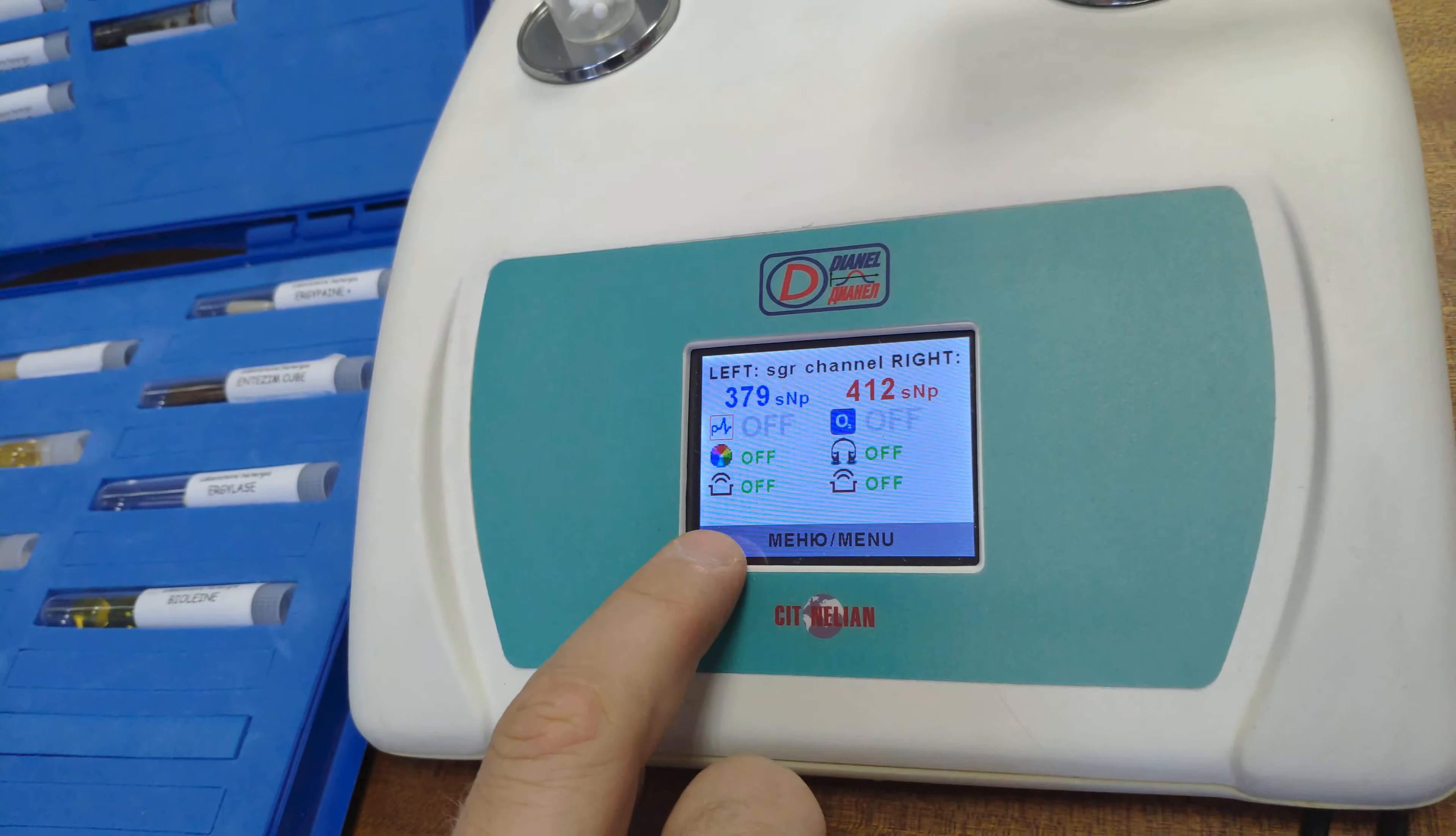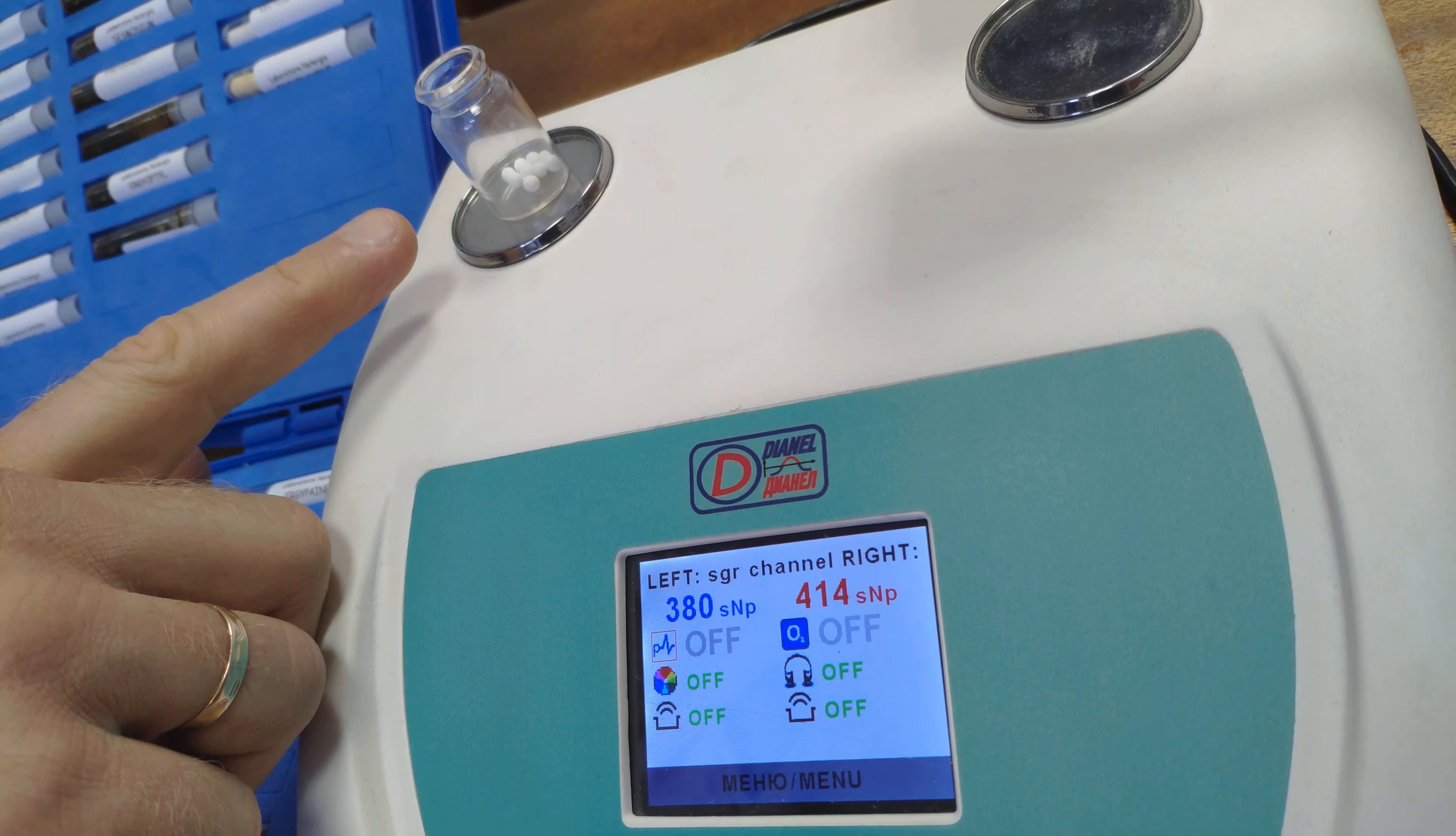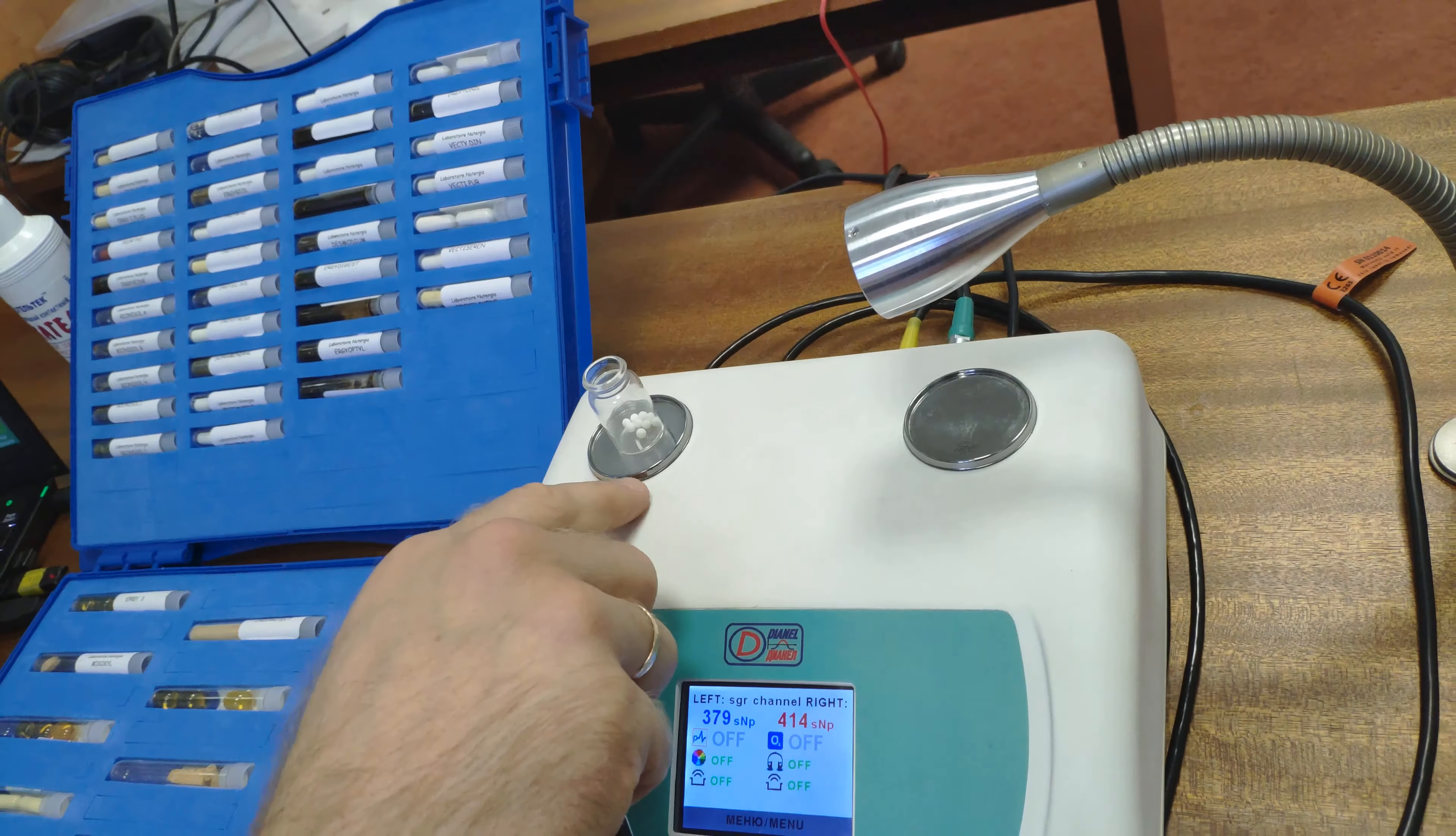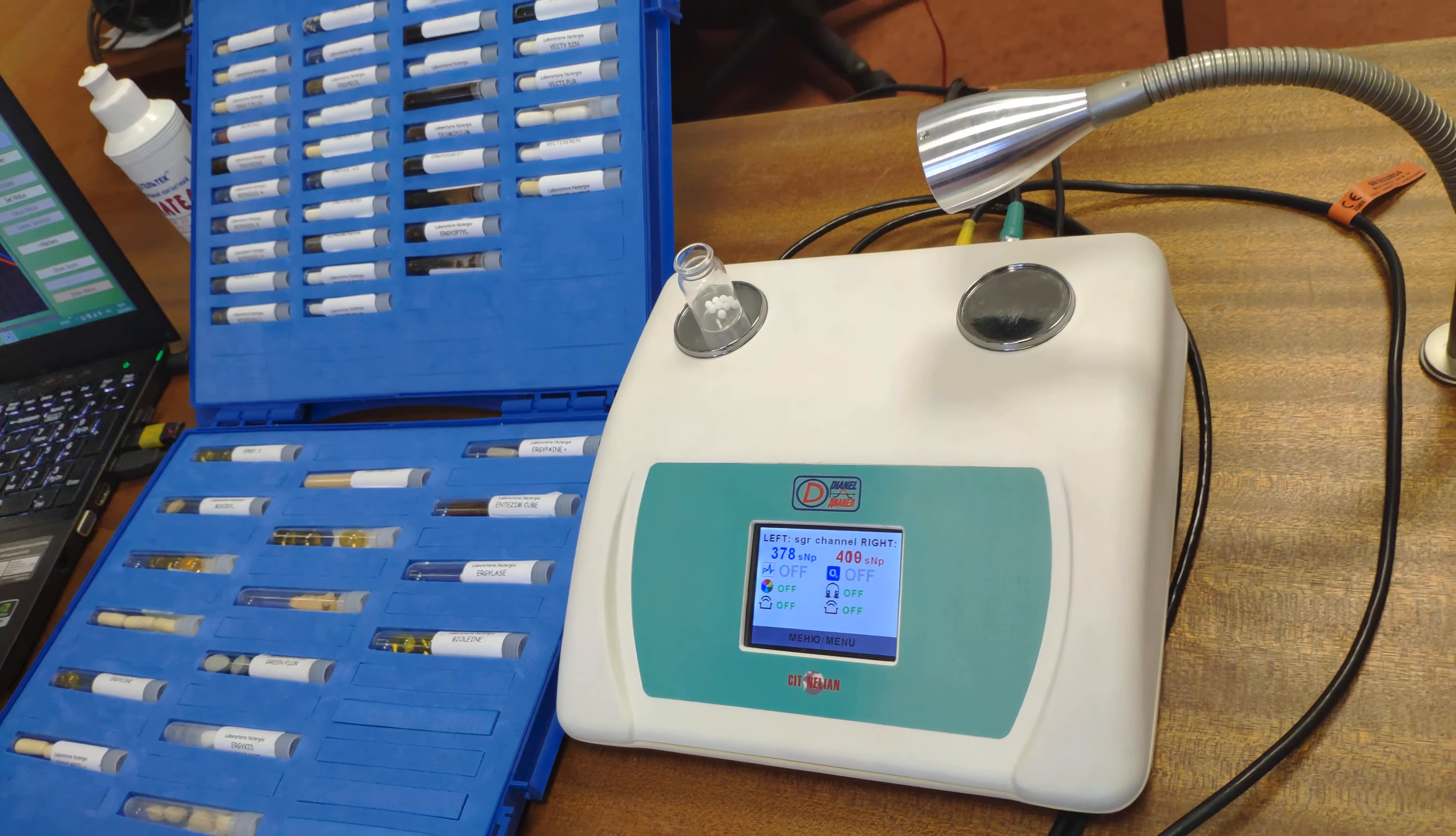For now, both VRT modules are off. We place the remedy to the left VRT module. We point the emitter to the remedy that we will test by vegetative resonance testing function.